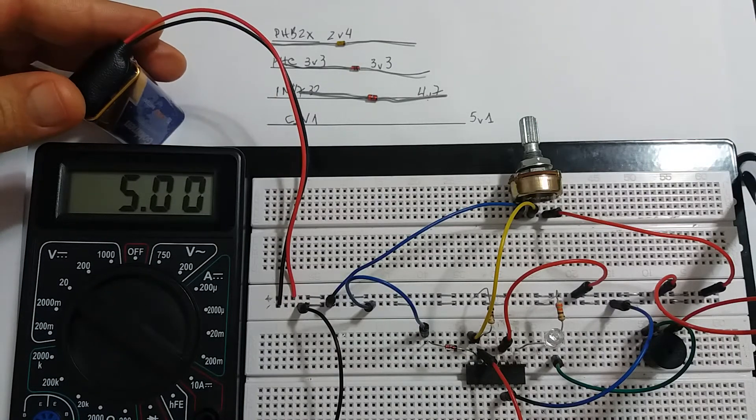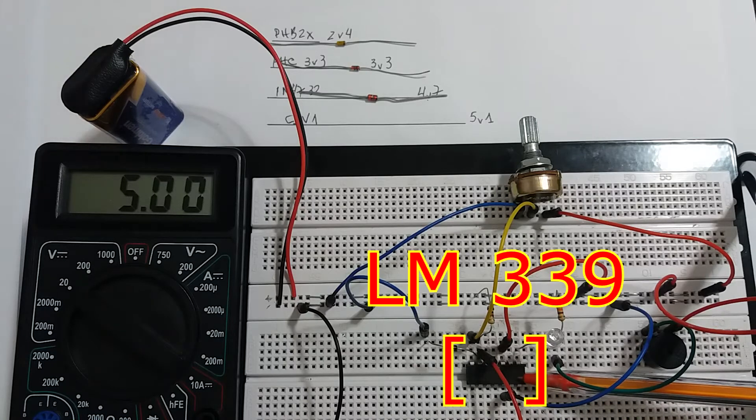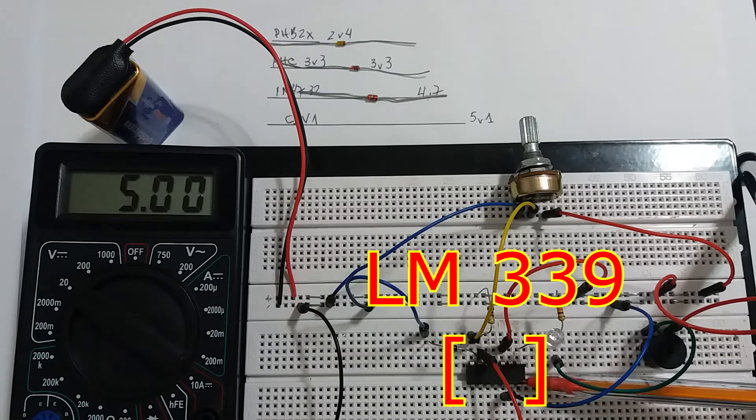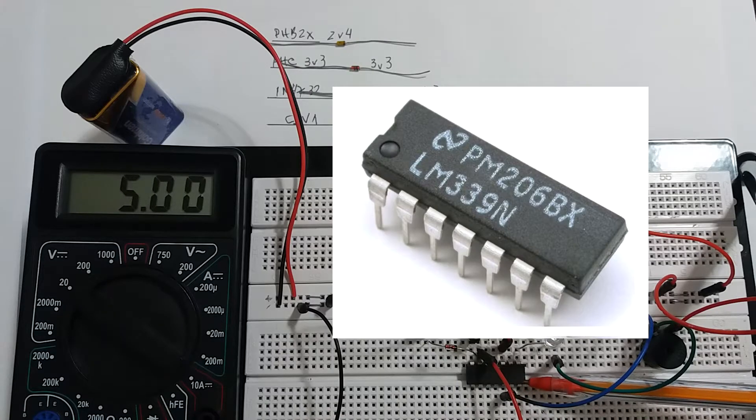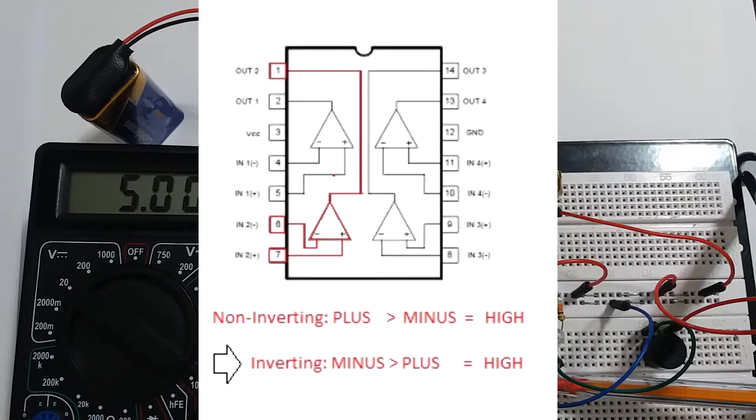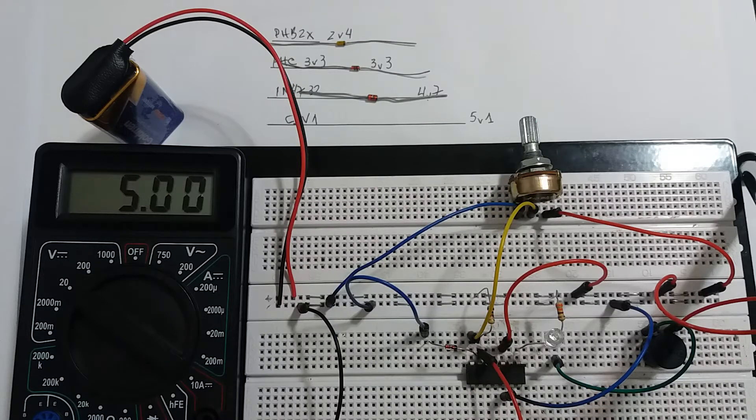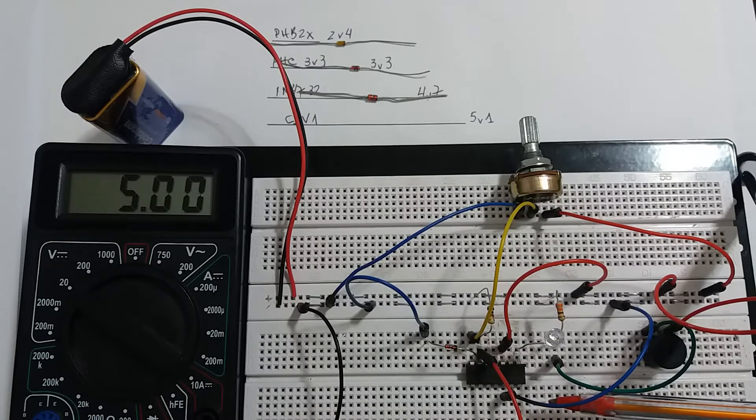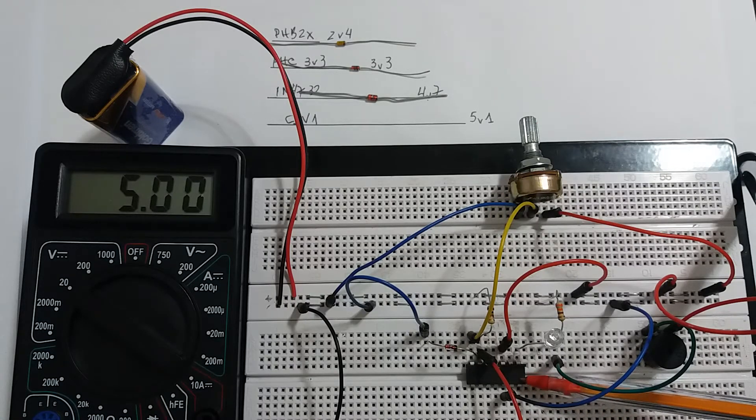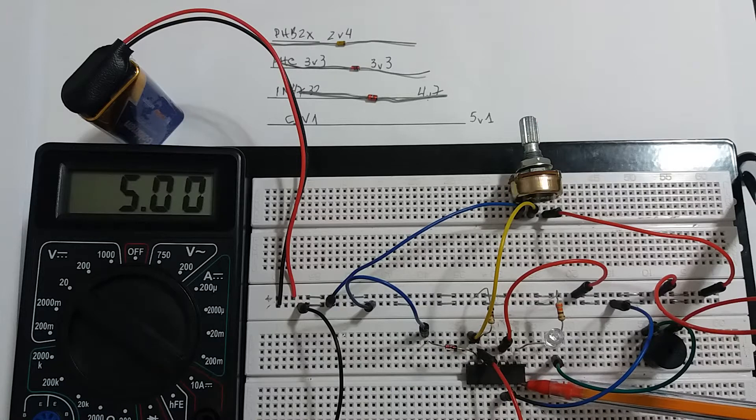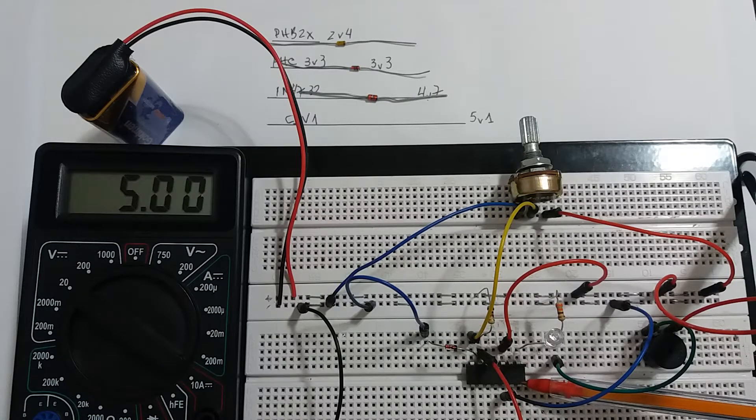We use LM339. LM339 is a comparator IC with 4 built-in comparators. A comparator is a simple circuit that moves signals between the analog and digital world. It compares two input voltage levels and gives digital output to indicate the larger one.